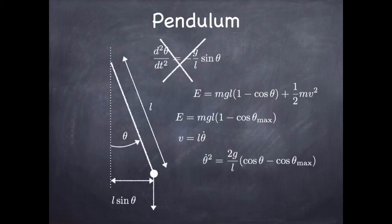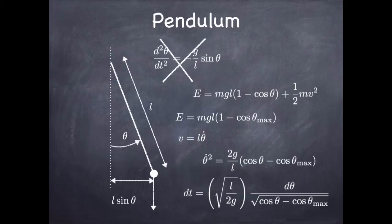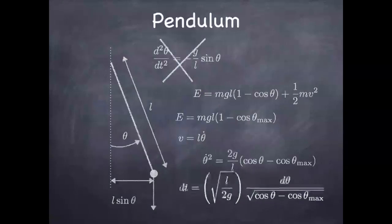If you solve for dt — remembering that θ̇ = dθ/dt — you get an expression that involves dθ and the cosine of the angle and the cosine of the maximum angle. So the period of time during which the thing changes its angle a little bit depends on its angle and also on the angle where you started the thing. You'll be going faster at the bottom if you started at a bigger angle at the top.